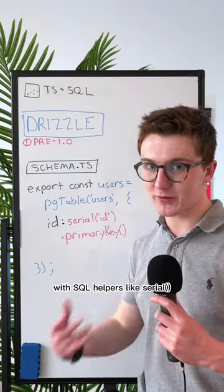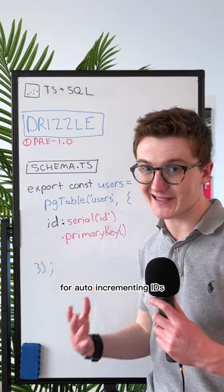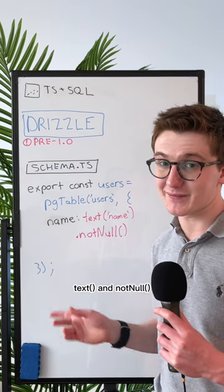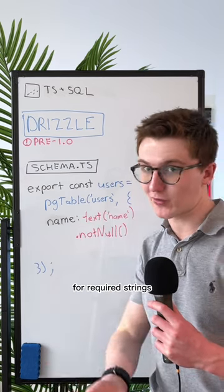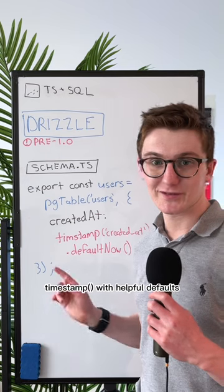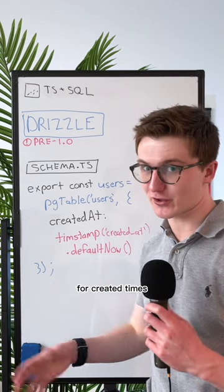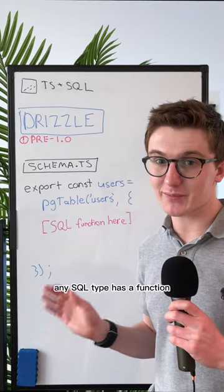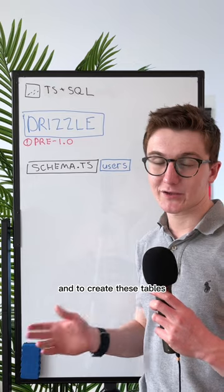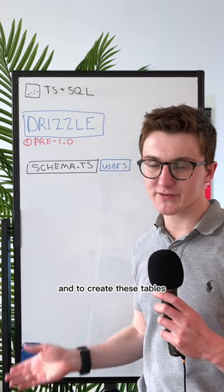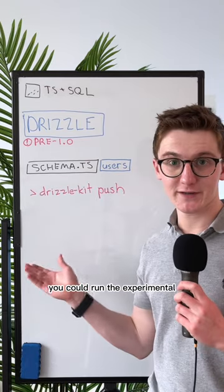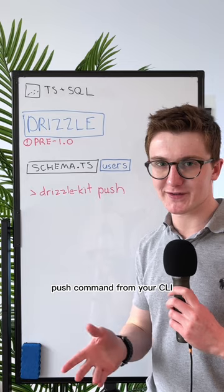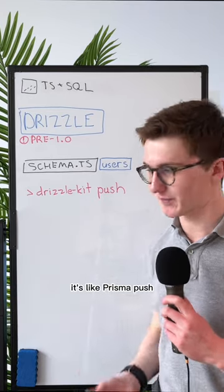With SQL helpers like serial for auto-incrementing IDs, use text and maybe not null for required strings, and use timestamp with helpful defaults for created times. Any SQL type has a function, and to create these tables in the SQL host you're using, you can run the experimental push command from your CLI — it's like Prisma push.